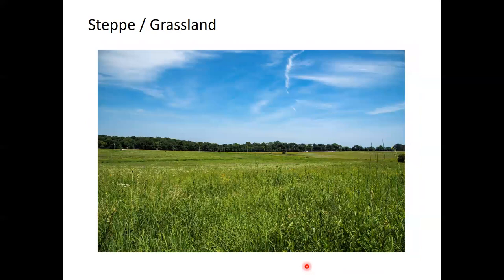Grassland, also called steppe. This biome gets less water than the deciduous forest, and you can see that because there are no trees inside the grassland biome. If there was a little bit more rain, the grassland would start to transition towards a deciduous forest. If there was a little less rain, it would transition back towards a desert. We can find grasslands in the majority of the middle of the United States.